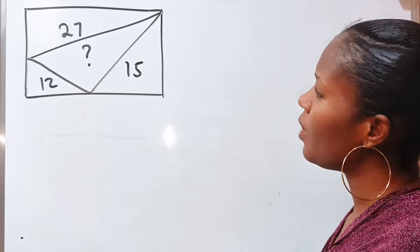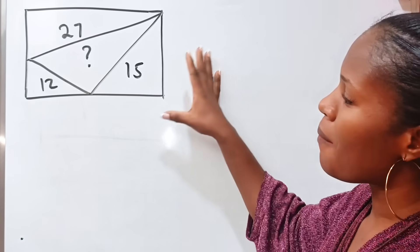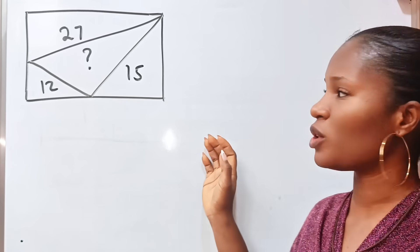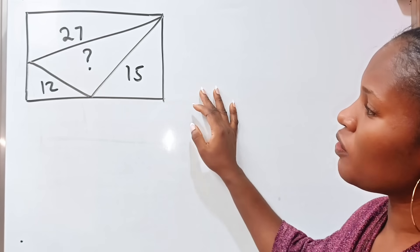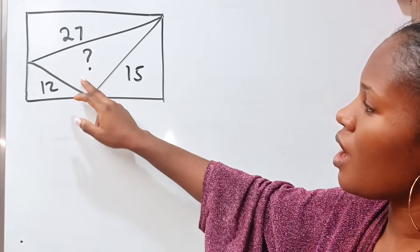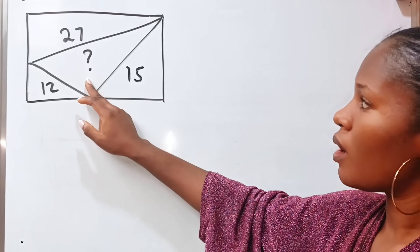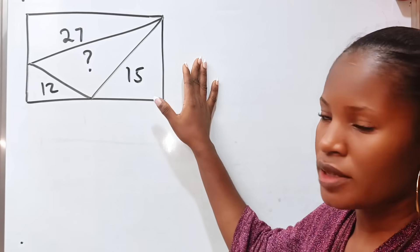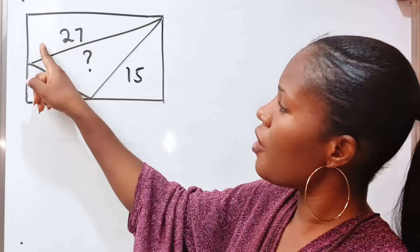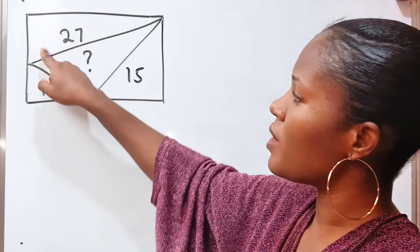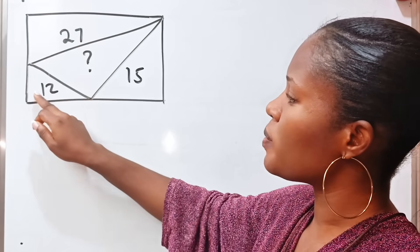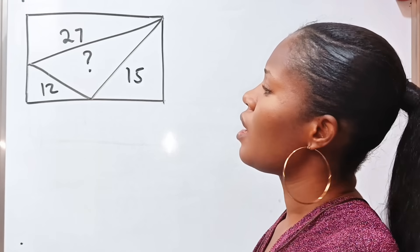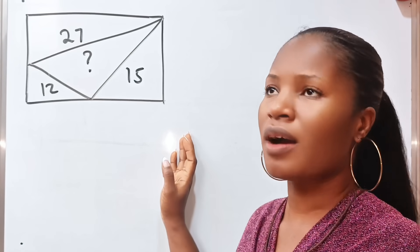Hello, wonderful people. We have an amazing geometry question to solve. The question says we should find the area of this portion. This is not drawn to scale, and this is a rectangle. The area of this region is 27, the area of this portion is 12, and the area of this portion is 15.